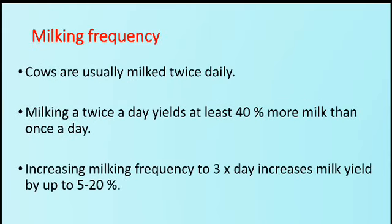The next factor is milking frequency. Cows are usually milked twice a day. Milking twice a day yields at least 40% more milk than once a day. Increasing milking frequency to 3 times a day increases milk yield by a further 5 to 20%.